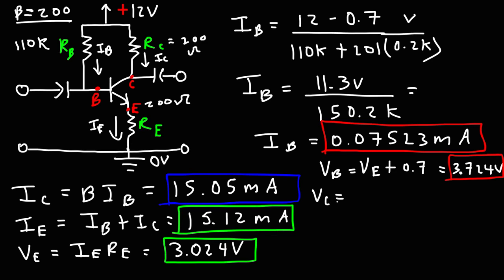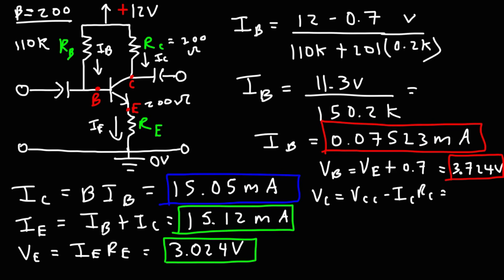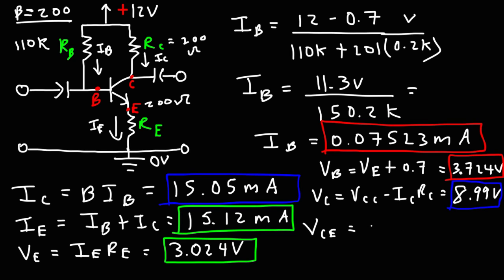The collector voltage is VCC minus the voltage drop across RC: VCC minus IC times RC. So 12 minus 15.05 milliamps times 0.2 kilohms gives a collector voltage of 8.99 volts. VCE is the potential across the collector and emitter of the NPN transistor: 8.99 minus 3.024, giving VCE of 5.966 volts.